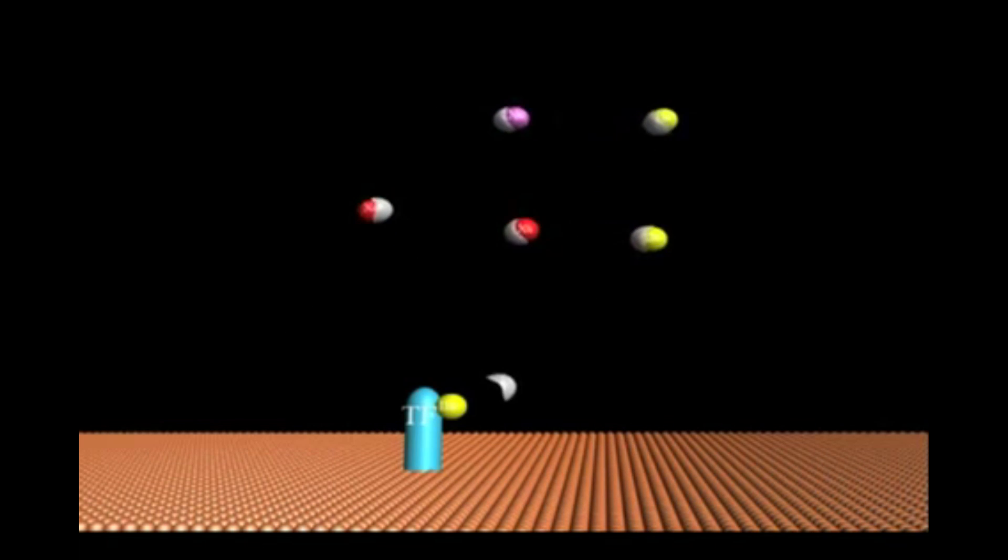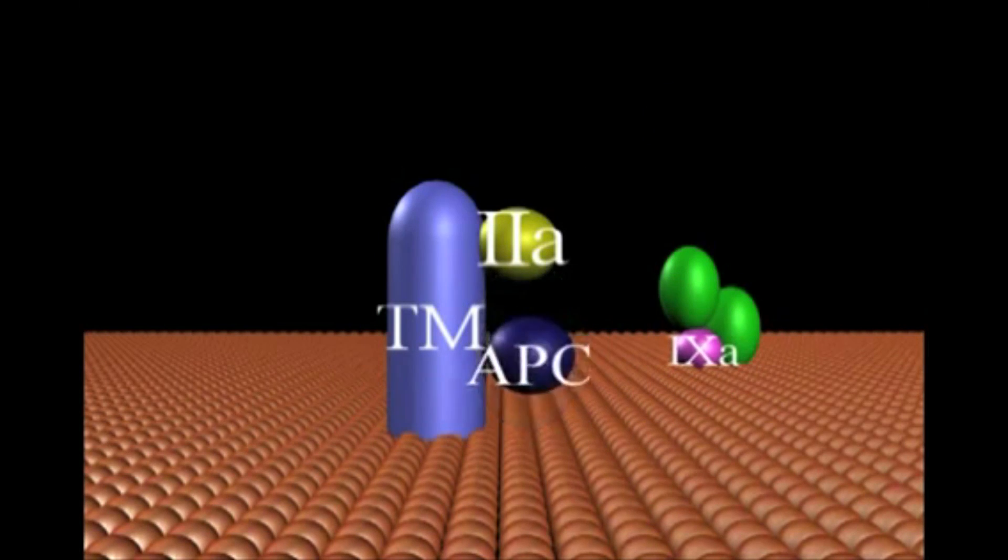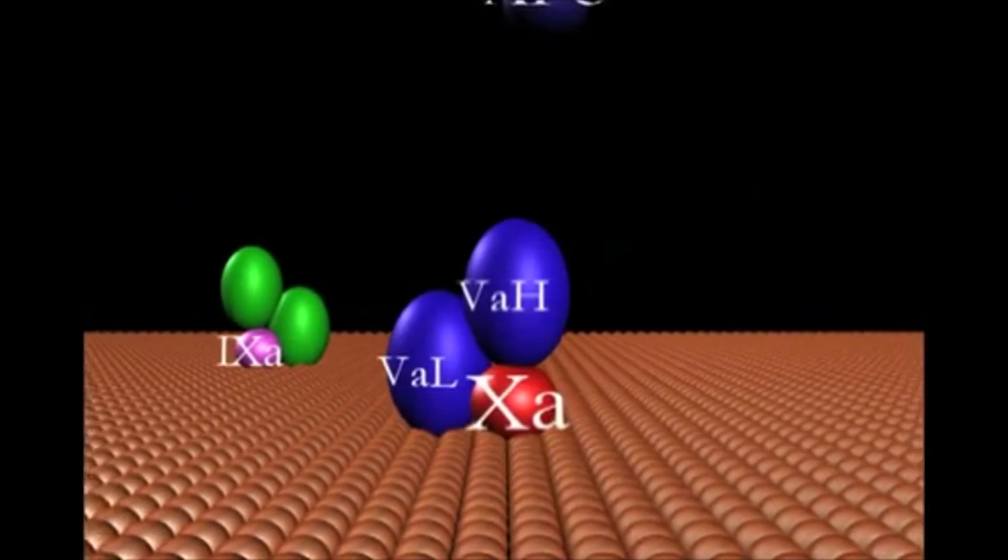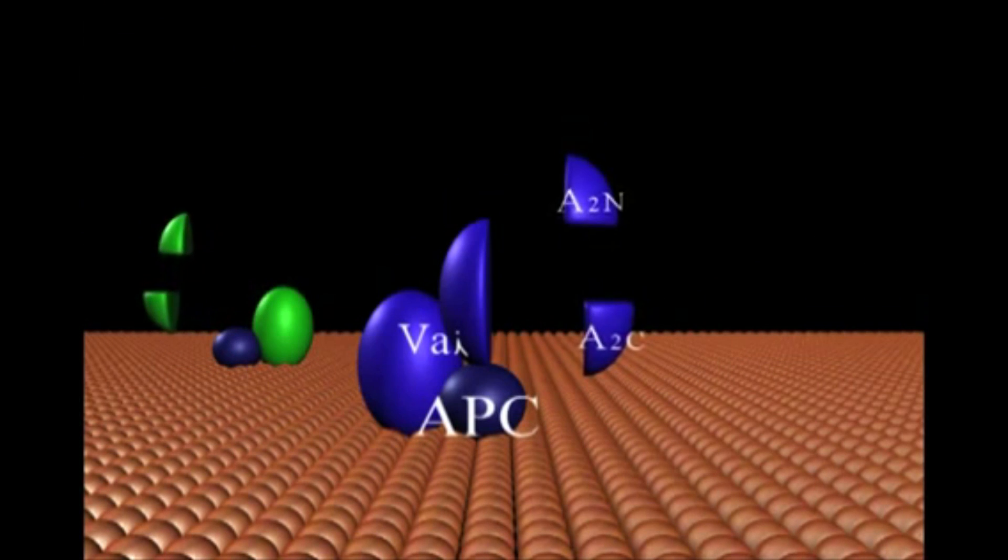The thrombin initially produced may also bind to vascular thrombomodulin (TM) constitutively present on the vascular endothelial cell and activates protein C to activated protein C (APC).